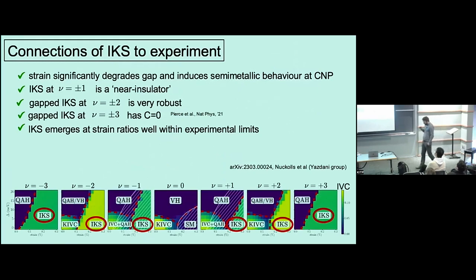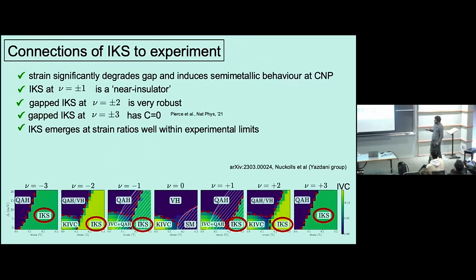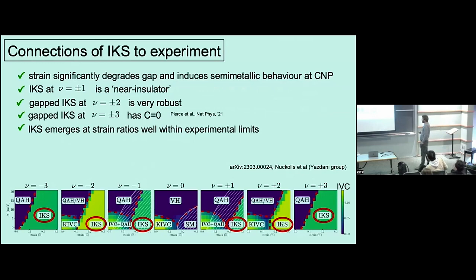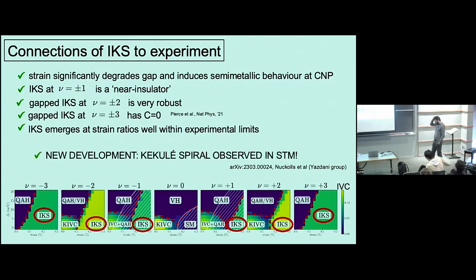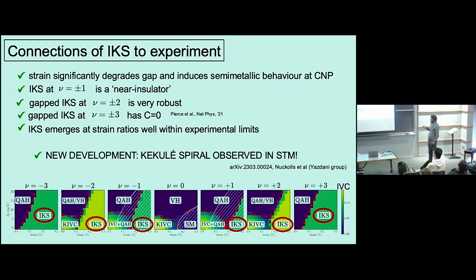A short summary of the IKS and how it compares to experiments: we get the semi-metal at neutrality — good, that's seen in experiments. We get metals at ν = ±1 — good, also seen in experiments. We get the strongest insulators at ν = ±2 — very good, because mostly when insulators are seen in experiments they're found at ν = ±2. And the IKS at ν = ±3 is time-reversal symmetric, so it definitely does not have anomalous Hall response — and again, that agrees nicely with experiments. The new experimental developments that made me decide to talk about IKS here is that there were some recent experiments which seem to give striking evidence for IKS order in magic angle graphene.